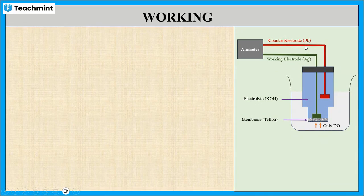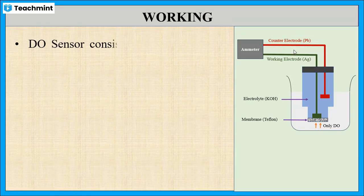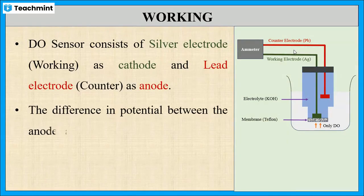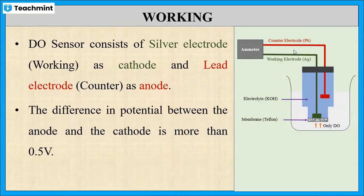The potential difference between these two electrodes is more than 0.5 volt, which is the essential requirement for reducing the dissolved oxygen without the application of external potential.